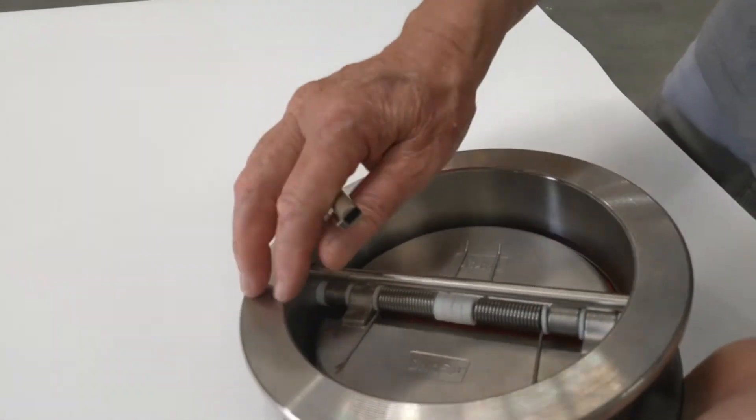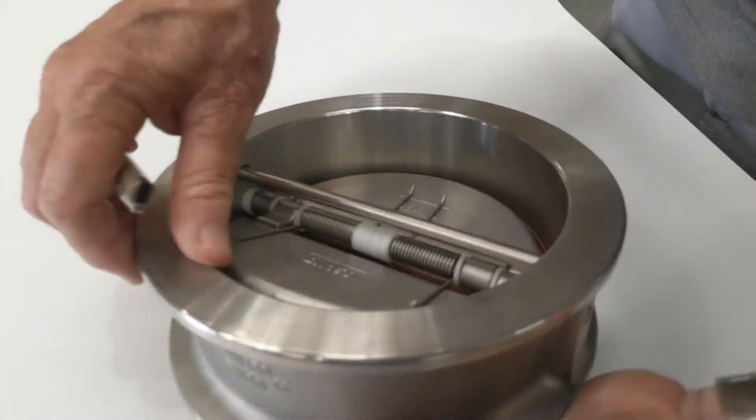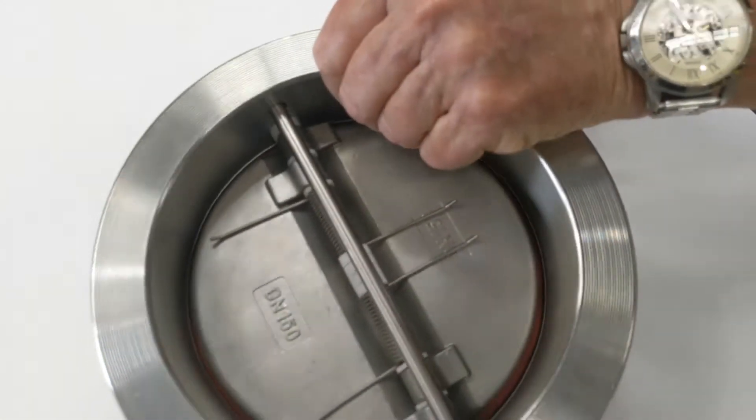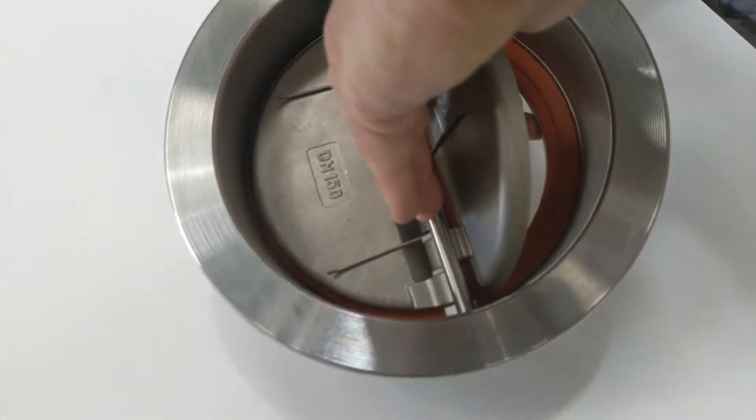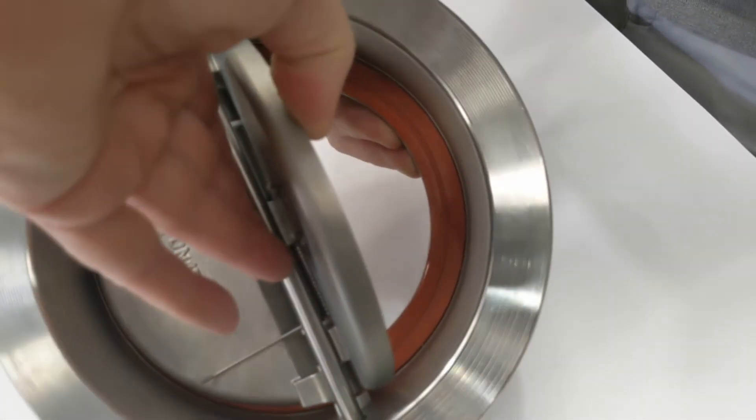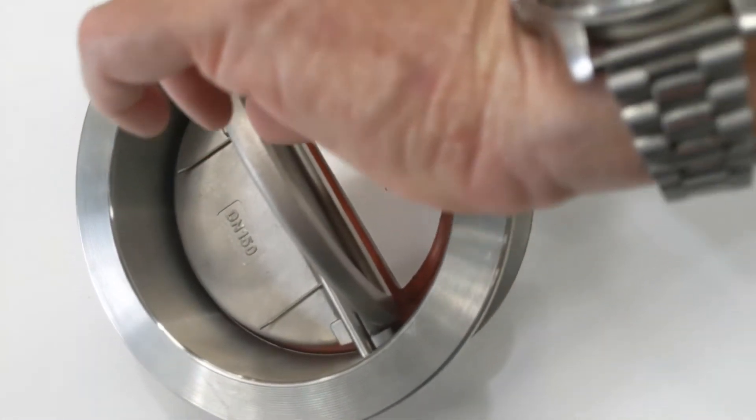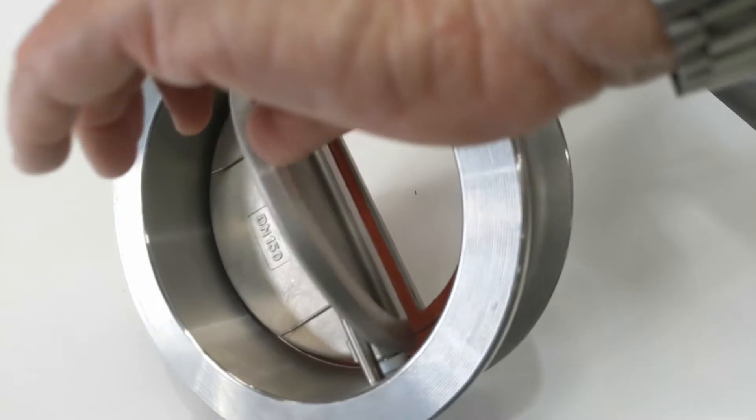And push this up, as you look down on there you can see the rubber red rubber seat right on seat in that face. And this is a polish finish face on the inside of the disc, so this gives a very good seal.